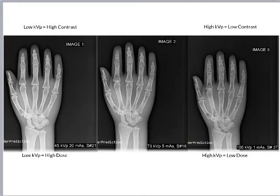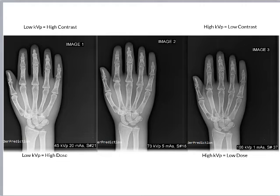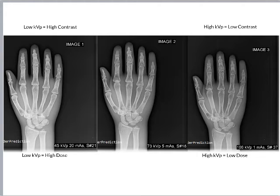Conversely, image three was taken at a KVP of 160 — a high KVP — and has relatively low contrast. This is because due to the increased power of the photons, more and more of the photons passed through the bones of the hand, resulting in a kind of equal darkening regardless of whether we were looking at the area of the bones or the area of the soft tissue. This provides a relatively low contrast.